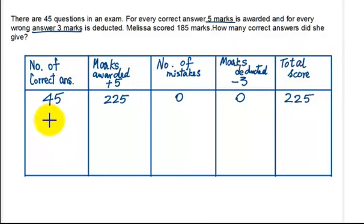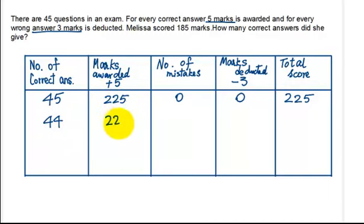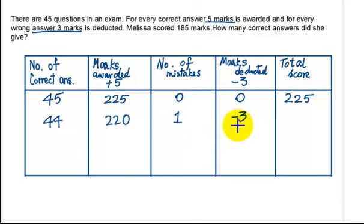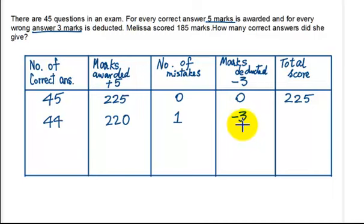Now we're going to assume that if Melissa had made one mistake, the number of correct answers would be 44. And 5 marks is being awarded for every correct answer, so in this case, 44 times 5 will give us 220. Number of mistakes in this case: we have assumed that Melissa made one mistake. For one mistake, the marks deducted would be minus 3. So the total score would be 220 minus 3, which is 217.